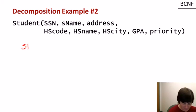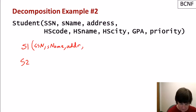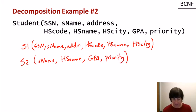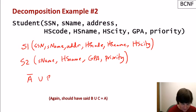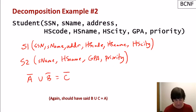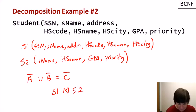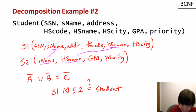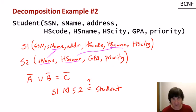Now a second possible decomposition into S1 and S2: S1 gets social security number, student name, address, high school code, high school name, and high school city. S2 gets student name, high school name, GPA, and priority. Again, all attributes are captured. But will joining S1 and S2 give us the student relation back? The answer is no. The join occurs on student name and high school name, which are not unique values, so joining may bring together information that doesn't actually belong together.